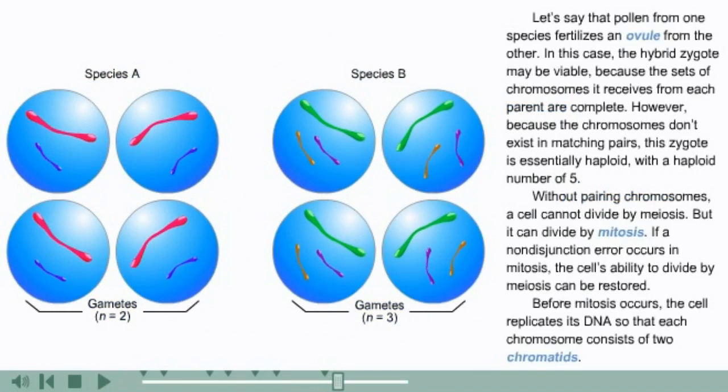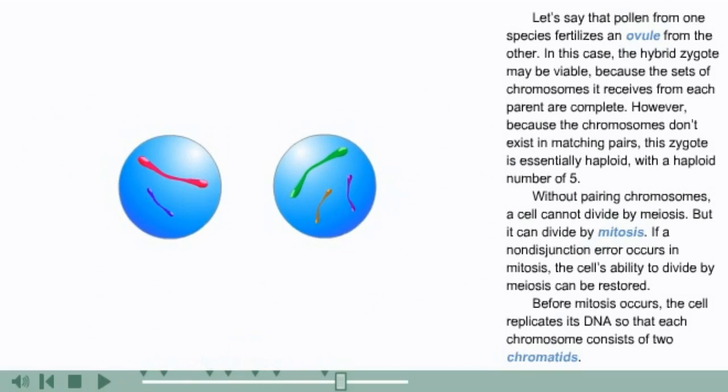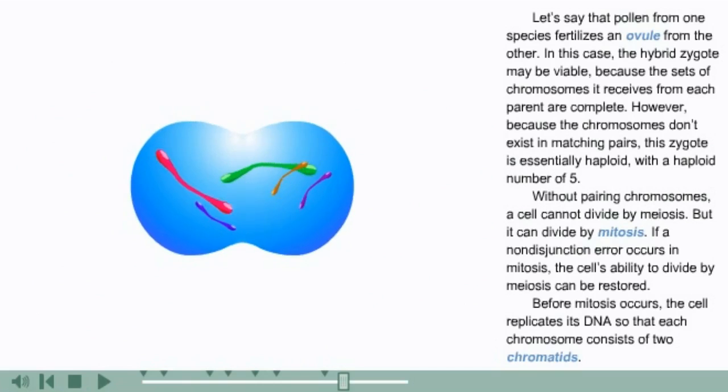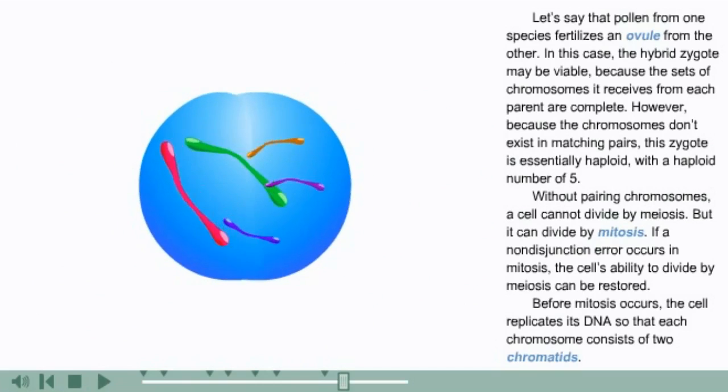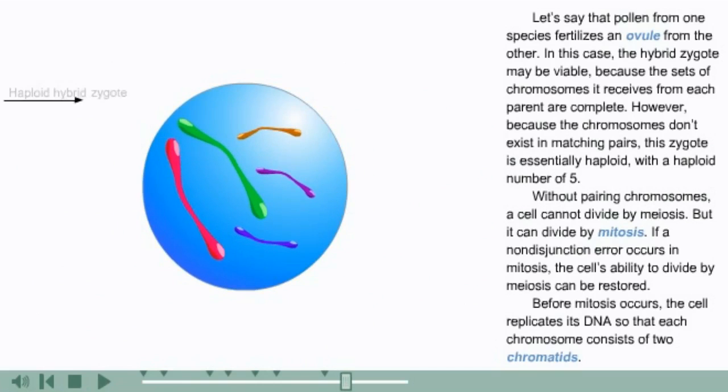Let's say that pollen from one species fertilizes an ovule from the other. In this case, the hybrid zygote may be viable because the sets of chromosomes it receives from each parent are complete. However, because the chromosomes don't exist in matching pairs, this zygote is essentially haploid with a haploid number of five. Without pairing chromosomes, a cell cannot divide by meiosis, but it can divide by mitosis.